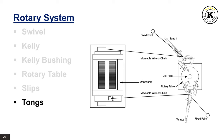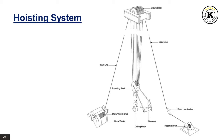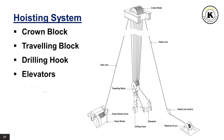Hoisting System. The hoisting system on a drilling rig does the heavy lifting on the rig. It is used to raise, lower, and suspend the drill string and lift casing and tubing for installation into the well. The hoisting system is composed of crown block, traveling block, drilling hook, elevators, drilling line, and drawworks.